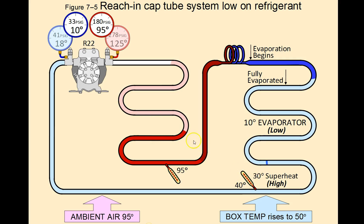On the other side of the system, now that we have low pressure because of the lack of refrigerant, the pressure drops on the high side of the system as well. Because of that lowered high side pressure, the condenser temperature is 95 degrees Fahrenheit and the outdoor ambient air temperature is also 95 degrees Fahrenheit. So it's not going to reject any heat whatsoever. It's not going to have any sub-cooling, because the ambient temperature and the condenser temperature are the same. Therefore, you're going to have very, very low sub-cooling and very, very high superheat, with both the high side and low side pressures being low.